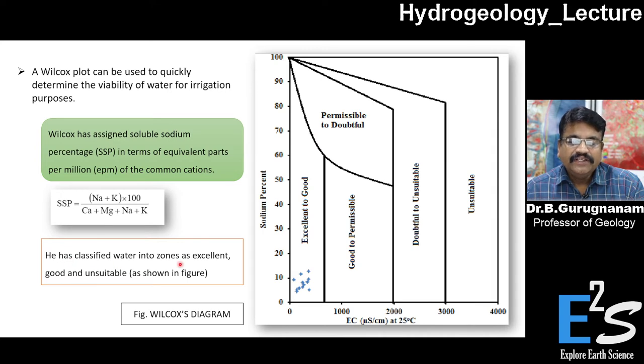He has classified the water into zones as excellent. The water can be used straight away for the purpose of irrigation or agriculture. It is good and sometimes it is unsuitable. He has calculated SSP in terms of EPM value and then this is taken to the graph. In this logarithmic part, EC is taken on the x-axis, EC normally represented μs per centimeter.